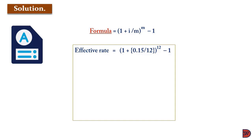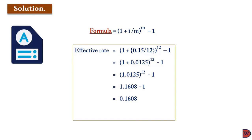This gives us 1 plus 0.0125, raised to the power 12, minus 1, giving us 1.0125 raised to the power 12, minus 1, which is 1.1608 minus 1, leading to 0.1608, which equals 16.08%. So a 15% nominal rate compounding monthly is equal to 16.08% effectively. You can apply 16.08% to the principal and get the same figure as taking 15% compounding monthly for 12 times.